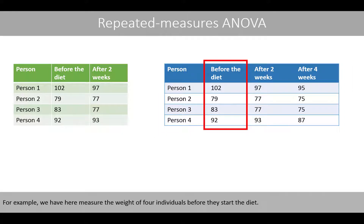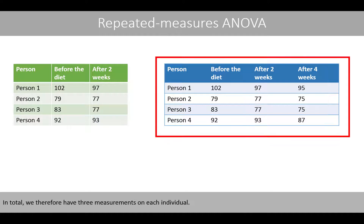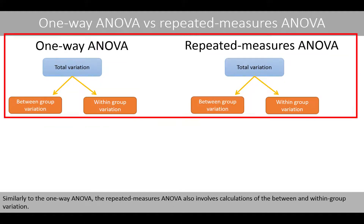For example, we have here measured the weight of four individuals before they start the diet. Then we measure the weight again on the same individuals two and four weeks after starting the diet. In total, we therefore have three measurements on each individual. Similar to the one-way ANOVA, the repeated measures ANOVA also involves calculations of the between- and within-group variation.